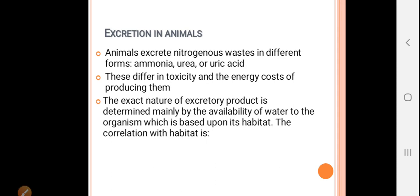Animals excrete nitrogenous wastes in different forms: ammonia, urea, or uric acid. These differ in toxicity and the energy cost of producing them. Ammonia is highly toxic, urea is less toxic, and uric acid is least toxic.